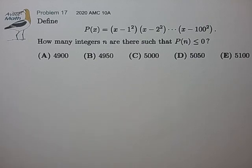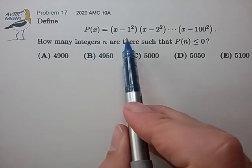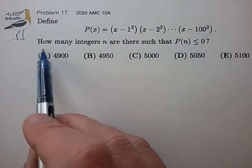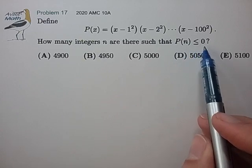Hi, this is problem 17 from the 2020 AMC 10a. Define p of x equal to this mess. How many integers n are there such that p of n is less than or equal to 0?